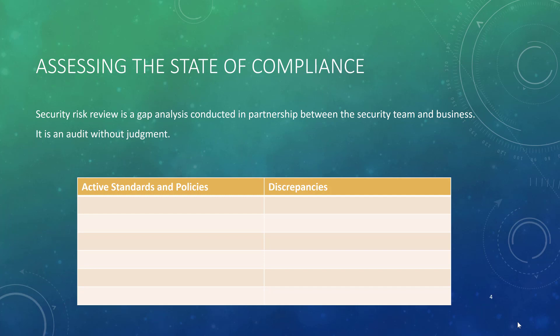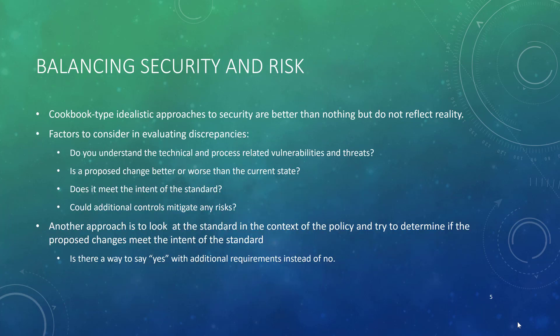Just think of it as a gap analysis. You're going to list all your active standards and policies, and put all those discrepancies in that second column. It's like an audit without judgment, but there is judgment because you're going to go back and address those discrepancies and make sure people are following the standards and policies. The cookie-cutter approaches we've done for the last 10 years or so just haven't worked out — it's better than nothing, but it doesn't reflect how the real world works.